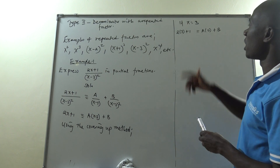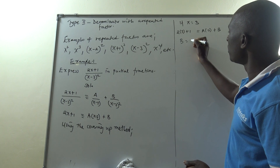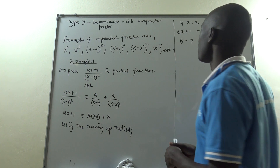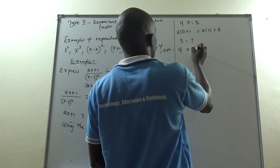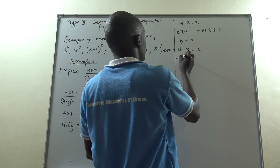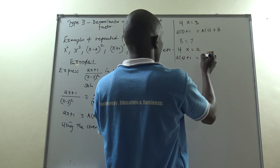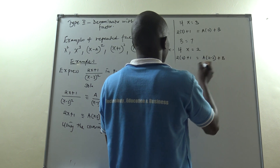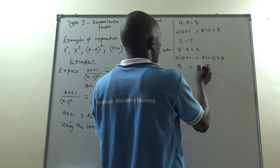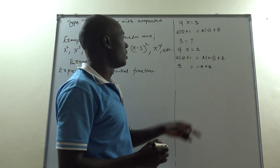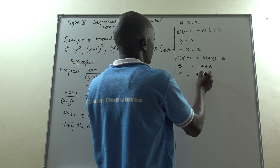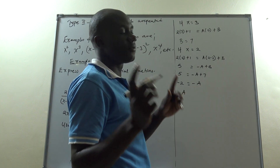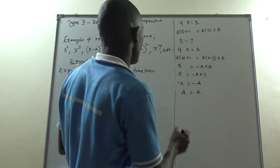2 times 3 gives 6, and 6 plus 1 gives 7. So the value of b equals 7. Next, substitute x equals 2: 2 times 2 plus 1 equals A times (2 minus 3) plus b. This gives 5 equals negative a plus b. Since b equals 7, we have 5 equals negative a plus 7, so negative 2 equals negative a. Dividing by negative 1, a equals 2.